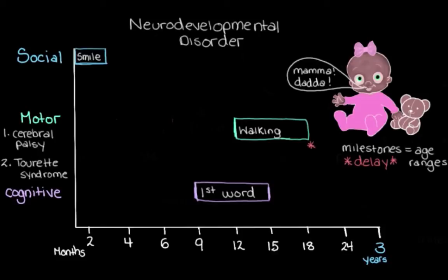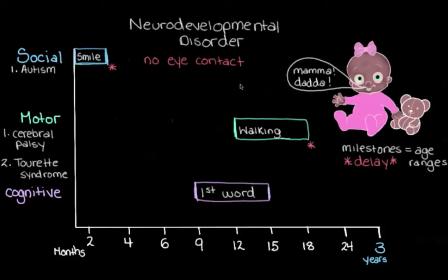What about our social domain? An example of a neurodevelopmental disorder in this domain would be Autism Spectrum Disorder, where the main thing we see are impairments in social skills. For someone with Autism Spectrum Disorder, we might see clues of these social impairments if our baby isn't smiling by about the age of three months old — that's starting to get a little late. And probably one of the most specific signs of Autism Spectrum Disorder is if our child just isn't really making meaningful eye contact with mom or dad.